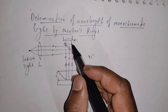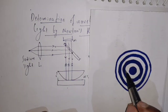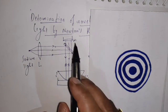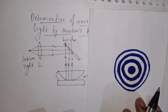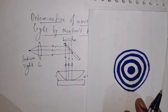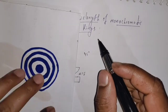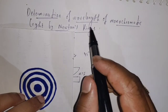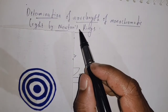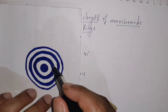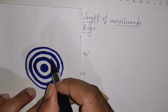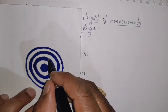The reflected light waves travel back to the glass plate and we observe them in a microscope. This is the experimental setup. We observe Newton's rings in the microscope. Now let us determine the wavelength of monochromatic light.